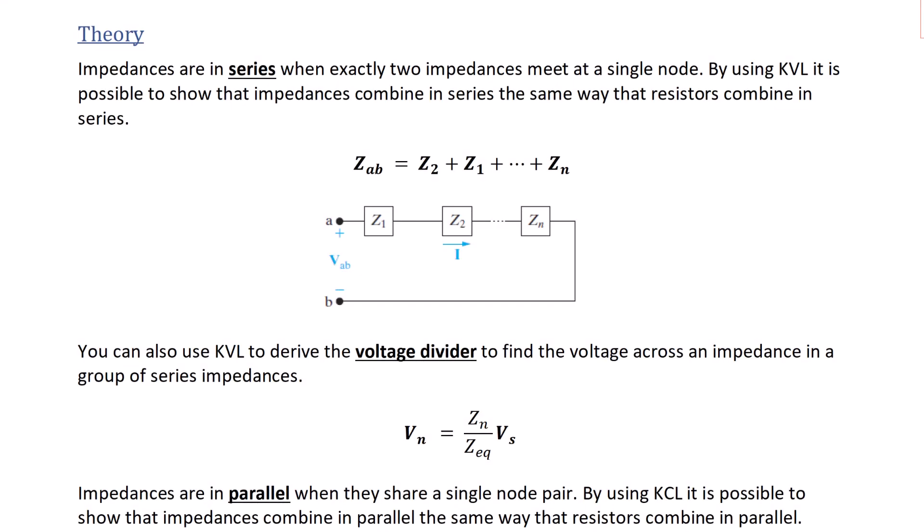The theory for this lecture is based upon KVL and KCL. Impedances in series combine exactly like resistors or inductors in series. Using KVL, it can be shown that if impedances are in series, ZAB equals Z1 plus Z2 and so on. Similarly, you can use the voltage divider just like for resistors, where the voltage across impedance N, VN, equals ZN over the equivalent impedance times the source voltage.